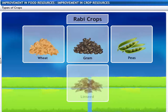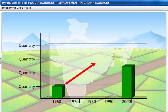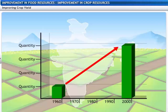Rabi crops are grown in the winter season from November to April — this season is called Rabi season. Wheat, gram, peas and linseed are Rabi crops. In India, the production of food grains increased four times from 1960 to the year 2000, and this increase in food production is due to crop variety improvement.